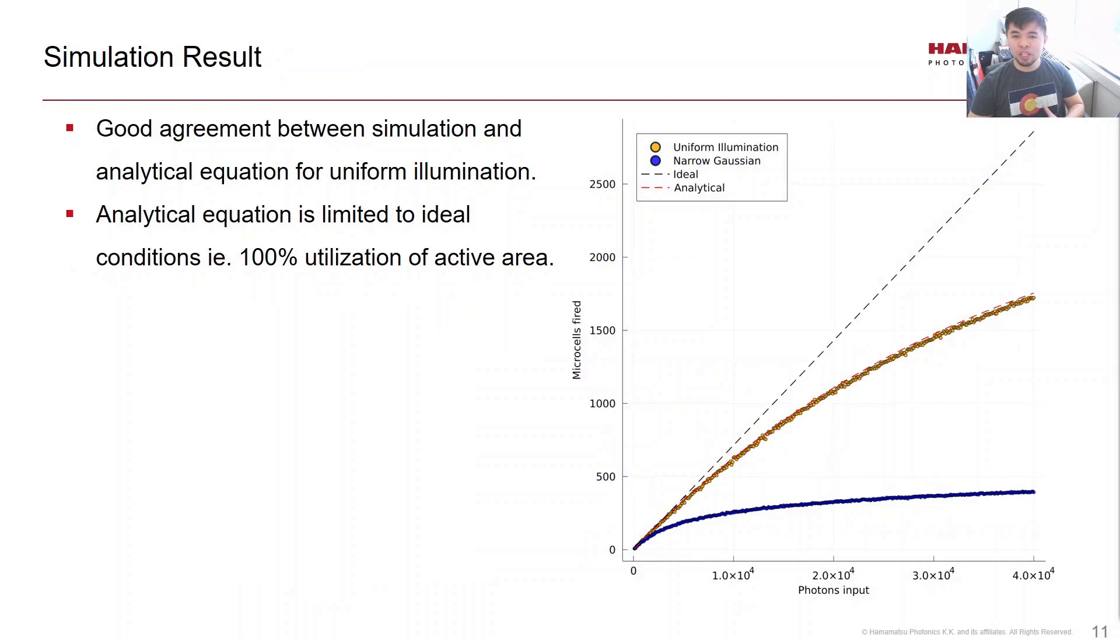So finally, I'll show you some results from our simulation. First, we have pretty good agreement between the simulation and the analytical equation for the ideal case of uniform illumination. But most of the time, our customers don't have uniform illumination across the active area. So the blue line is a result when we simulate with a narrow Gaussian beam, which is more representative of real-world conditions.